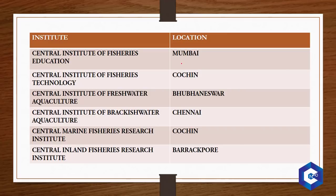Central Institute of Fisheries Technology is located in Kochi. Central Institute of Fresh Water Aquaculture is situated in Bhubaneswar. Central Institute of Brackish Water is in Chennai. Central Marine Fisheries Research Institute is in Kochi. Central Inland Fisheries Research Institution is in Barrackpore. You have to remember where these institutions are situated.